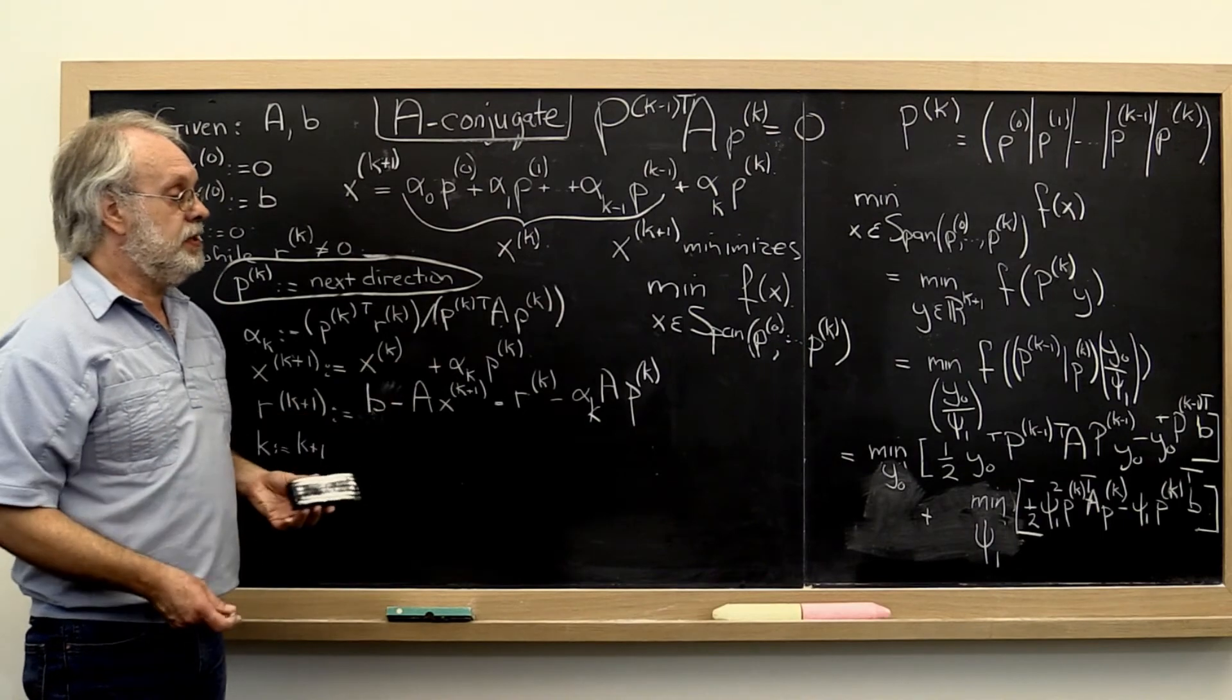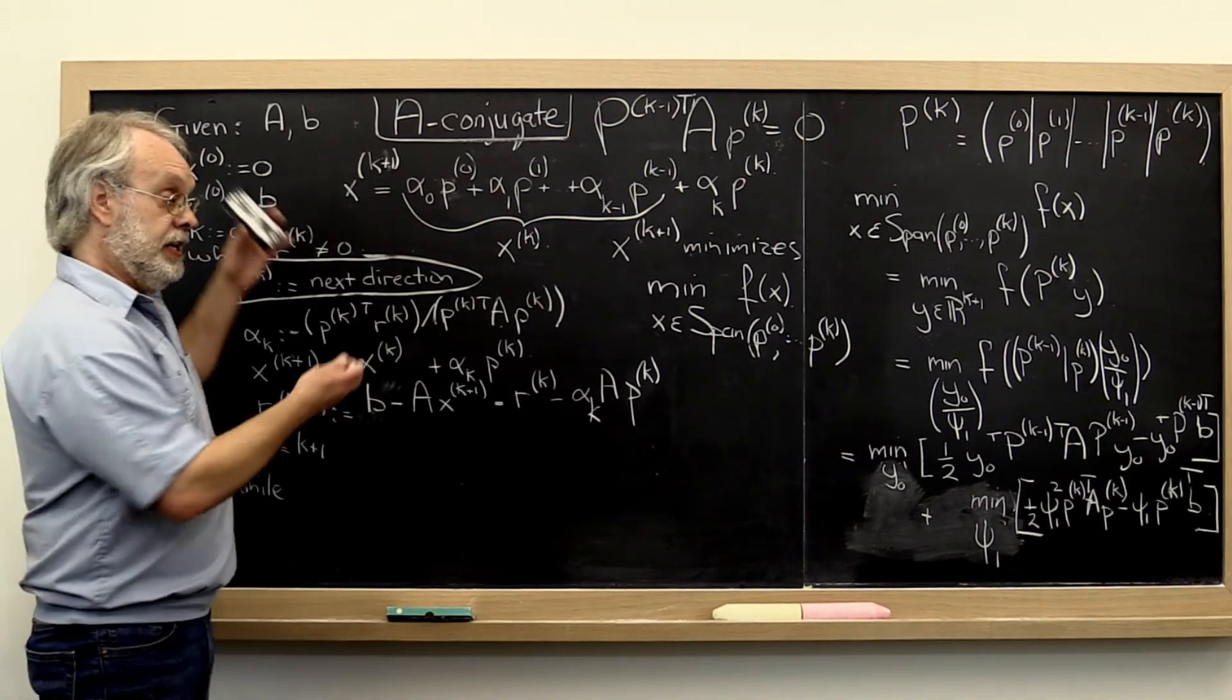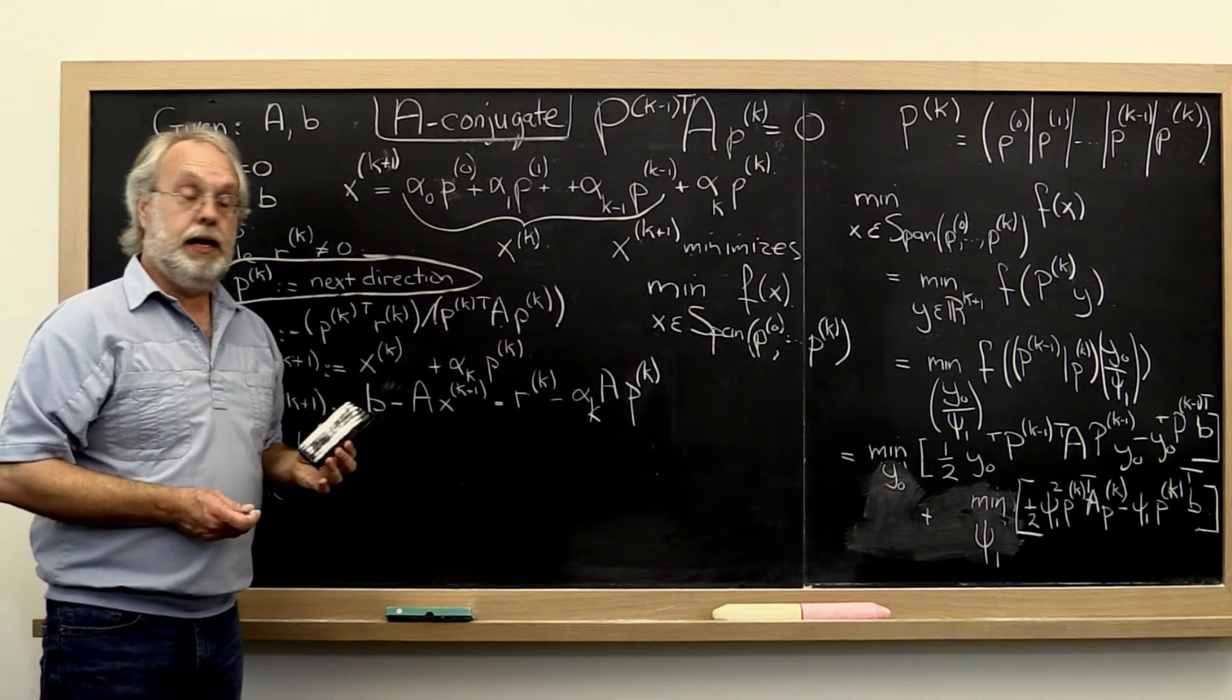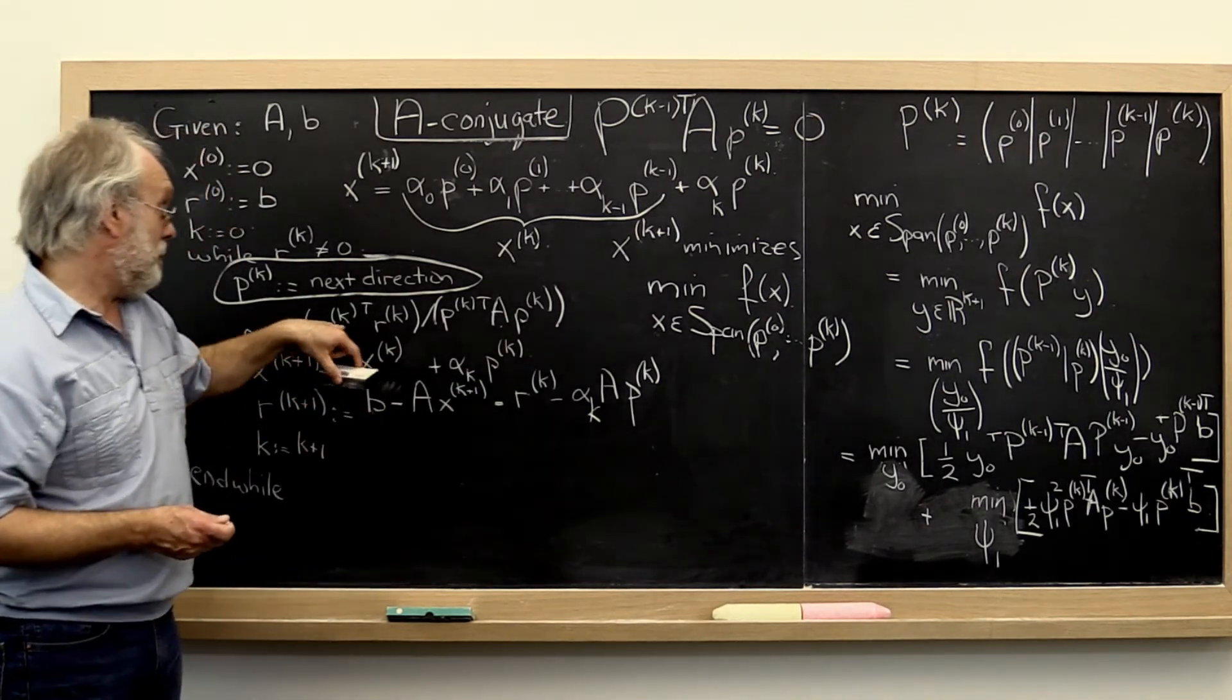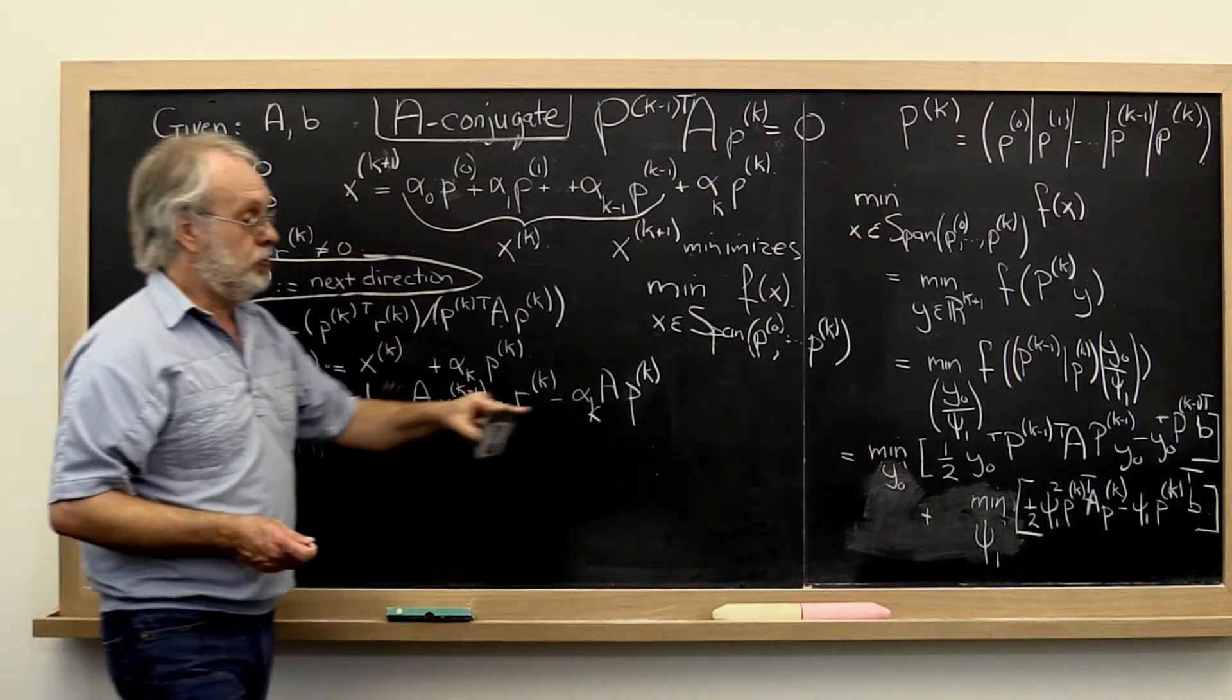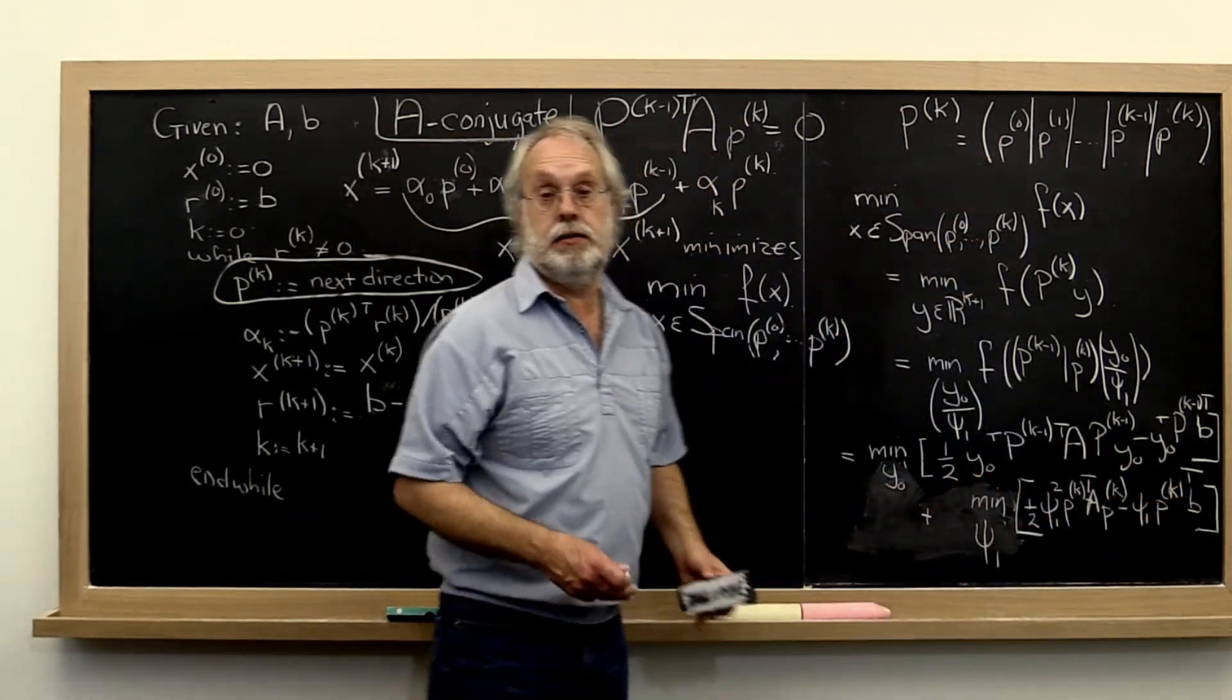And that turns out to actually be better because inherently round-off error will happen as the iteration proceeds. And as a result, it is actually better to use the most recent information about the residual as opposed to going back to the original right-hand side B.